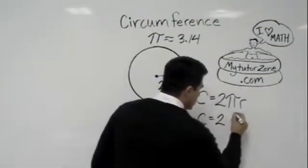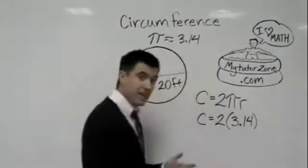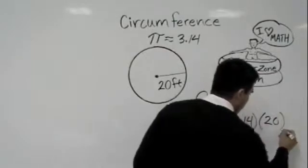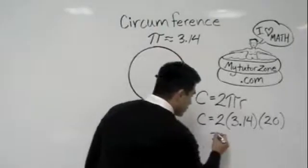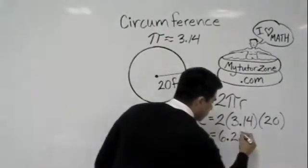And that's equal to 2 times 3.14 times 20. Alright. So now I know that 6.28 because 2 times 3.14 is 6.28.